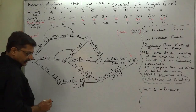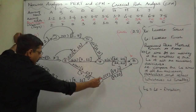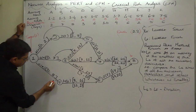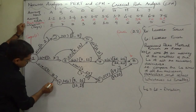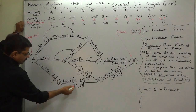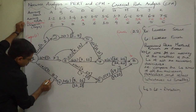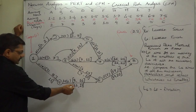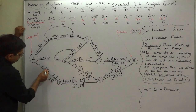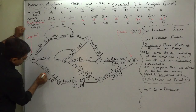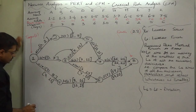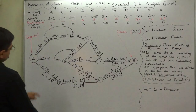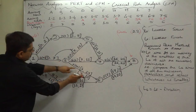In case of H, there is only one predecessor C. So for C, the latest finish will be 11 - that is the latest start of its successor H. And 11 minus 8 = 3 will be the latest start time for C.